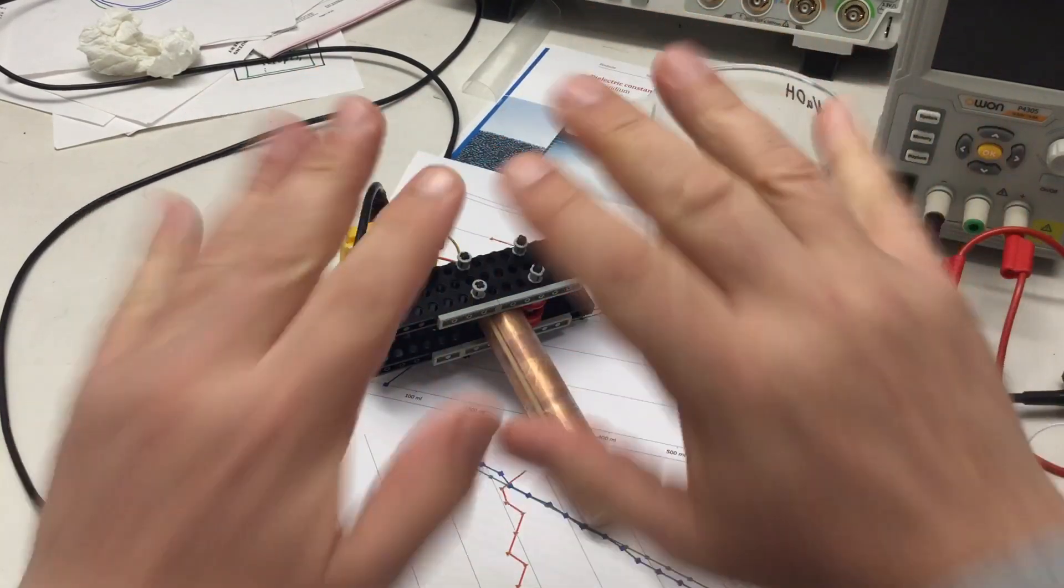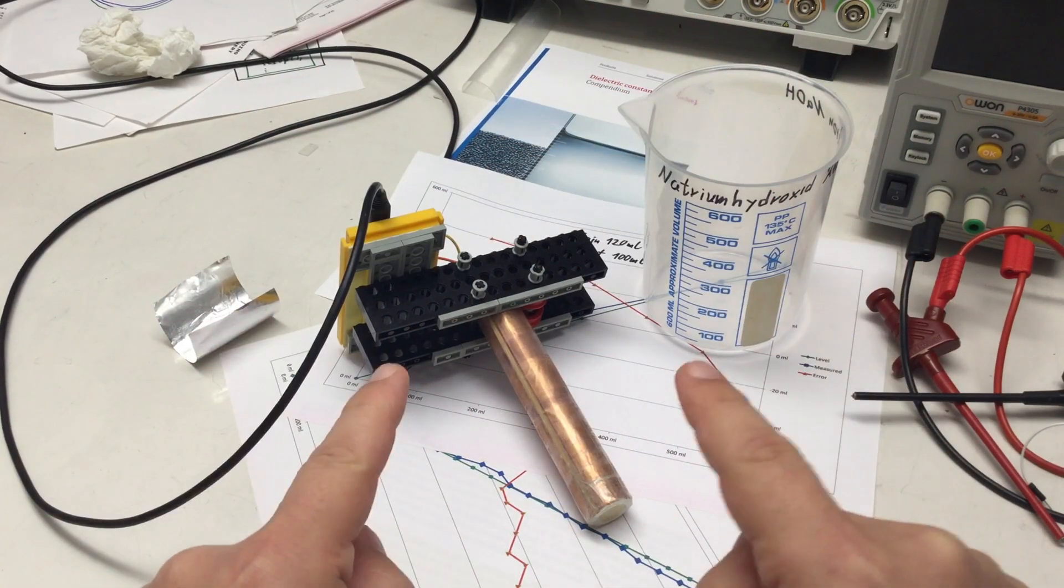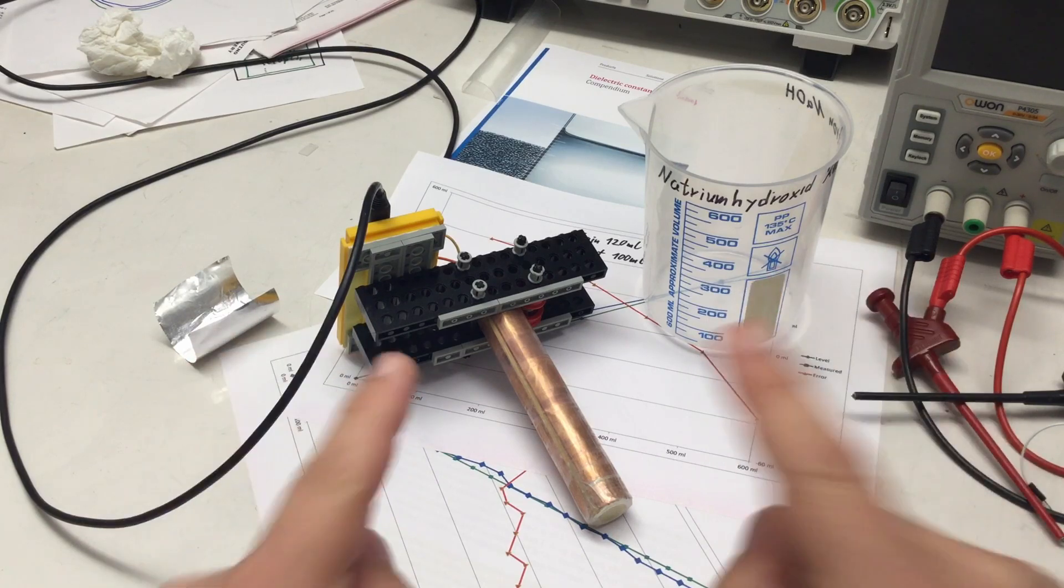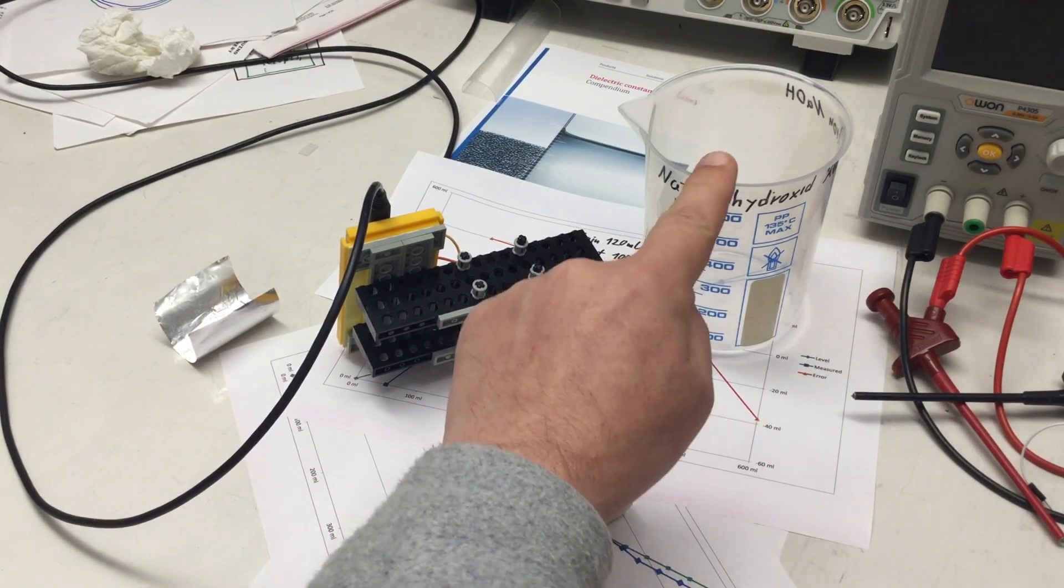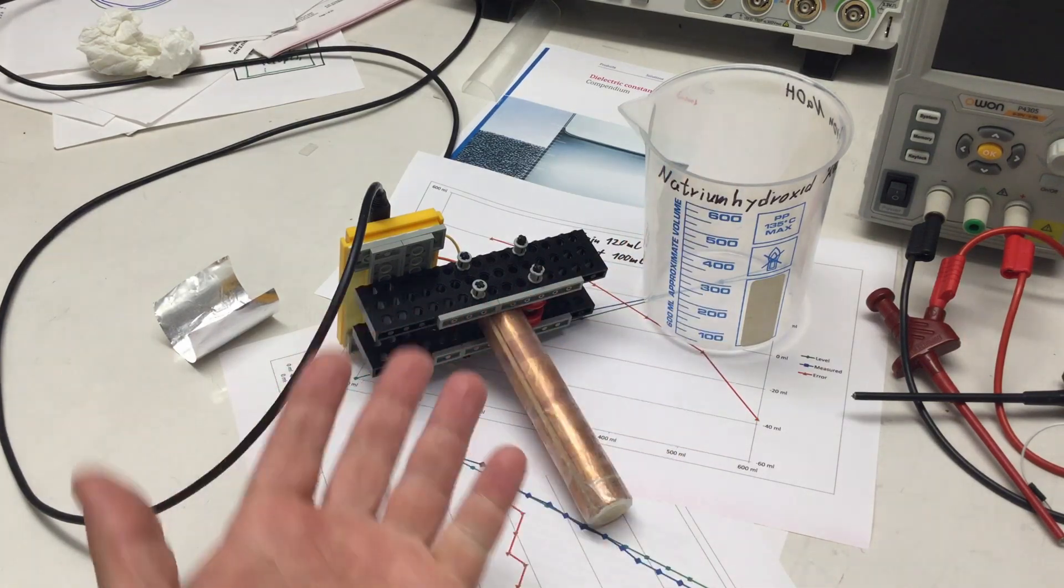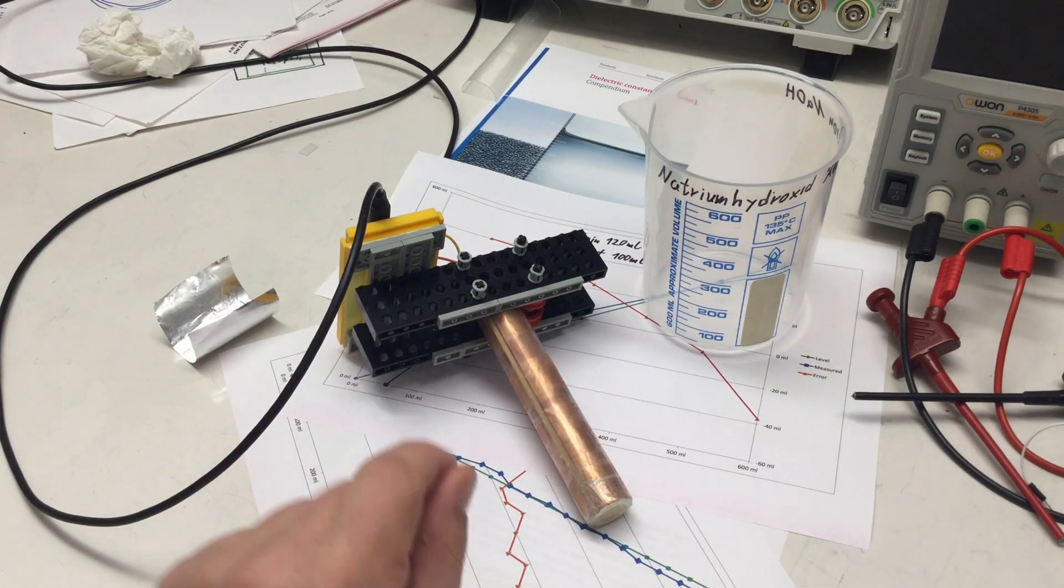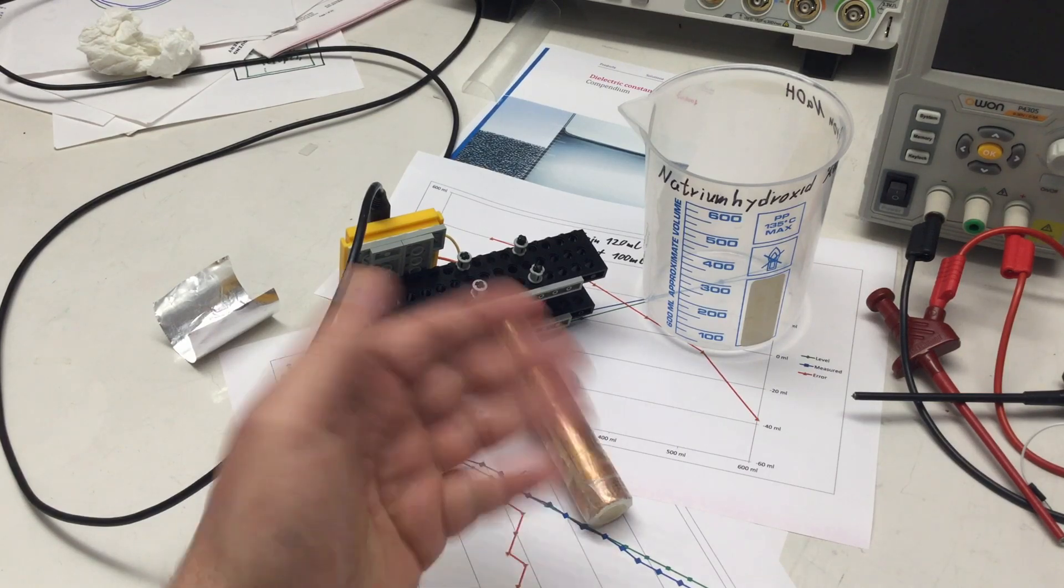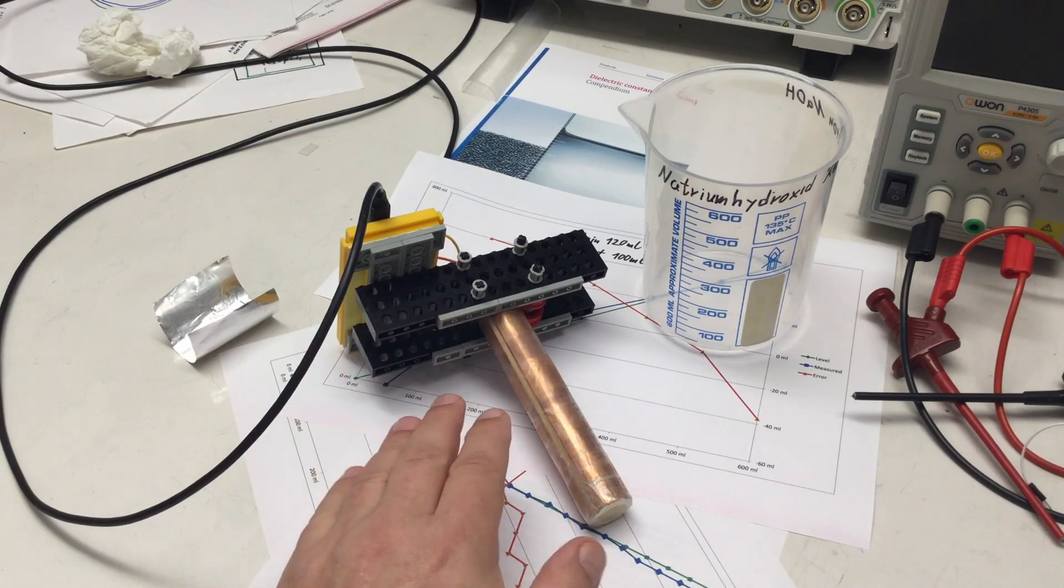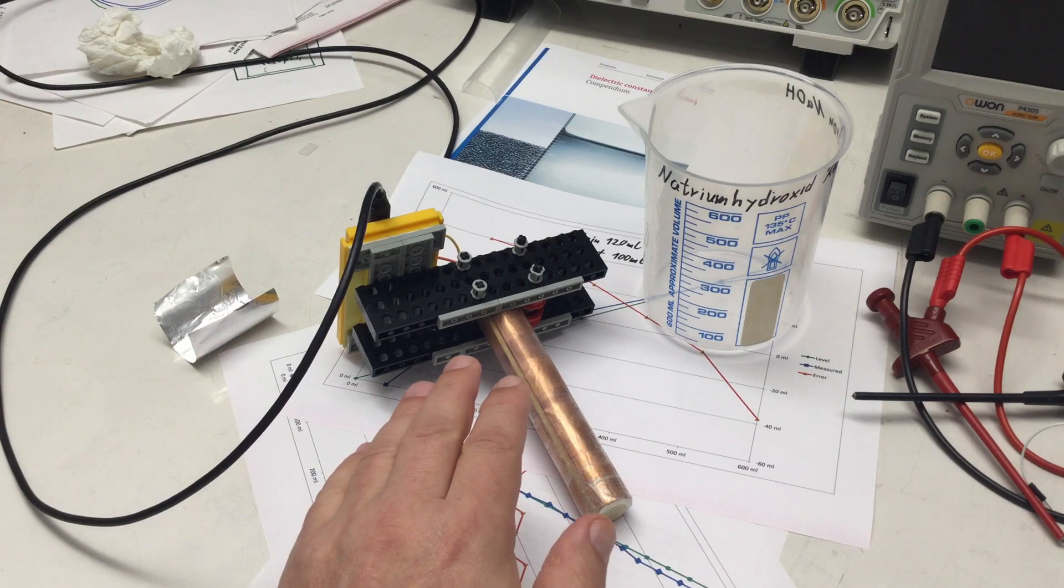Welcome back to the 10th video and really the last video for now about capacitive liquid level sensing. In part 9, I discovered that these capacitive sensors work differently for conductive and non-conductive liquids.